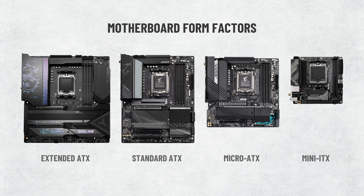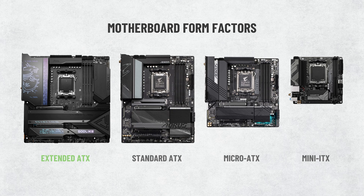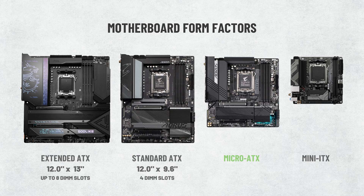The most obvious difference between standard ATX, micro ATX, mini ATX, and extended ATX motherboards are their dimensions. An extended ATX motherboard measures in at 12 inches tall by up to 13 inches wide, and can hold up to eight DIMM slots — those are the slots that memory gets installed to — but commonly come with four DIMM slots. A standard ATX motherboard measures in at 12 inches tall by 9.6 inches wide, and typically comes with four DIMM slots. A micro ATX motherboard measures in at 9.6 inches tall by up to 9.6 inches wide, and some come with four DIMM slots while others only come with two. A mini ATX motherboard measures in at 6.7 inches tall by 6.7 inches wide, and comes with two DIMM slots.